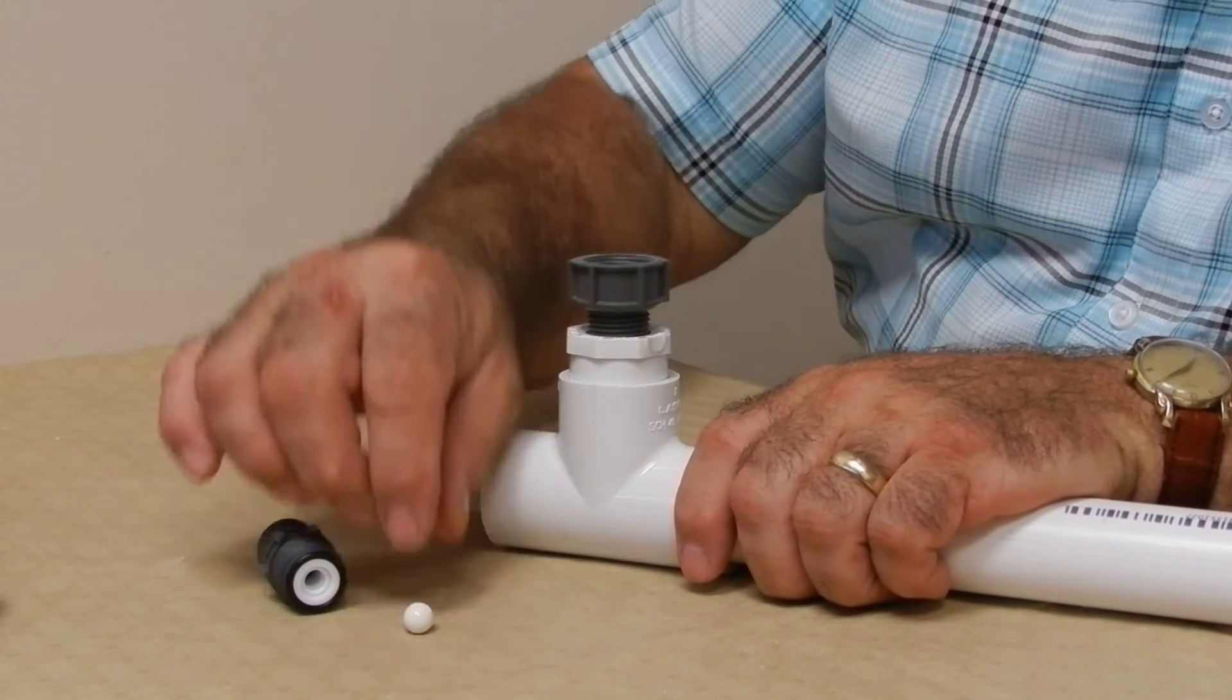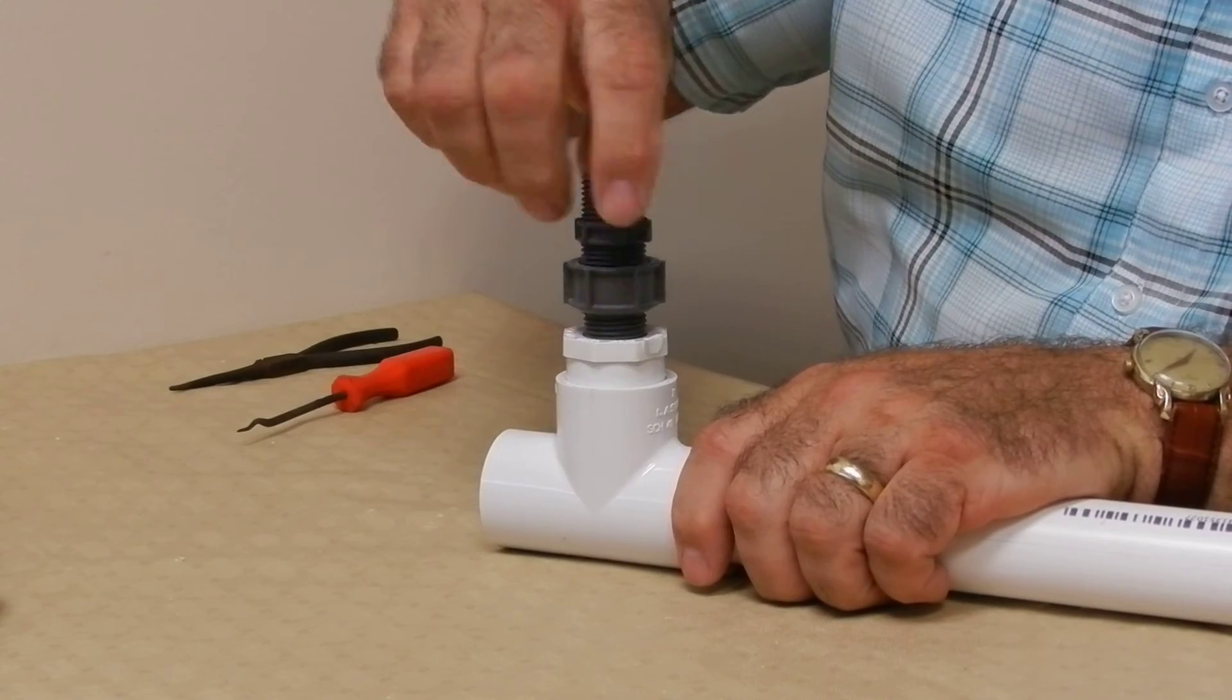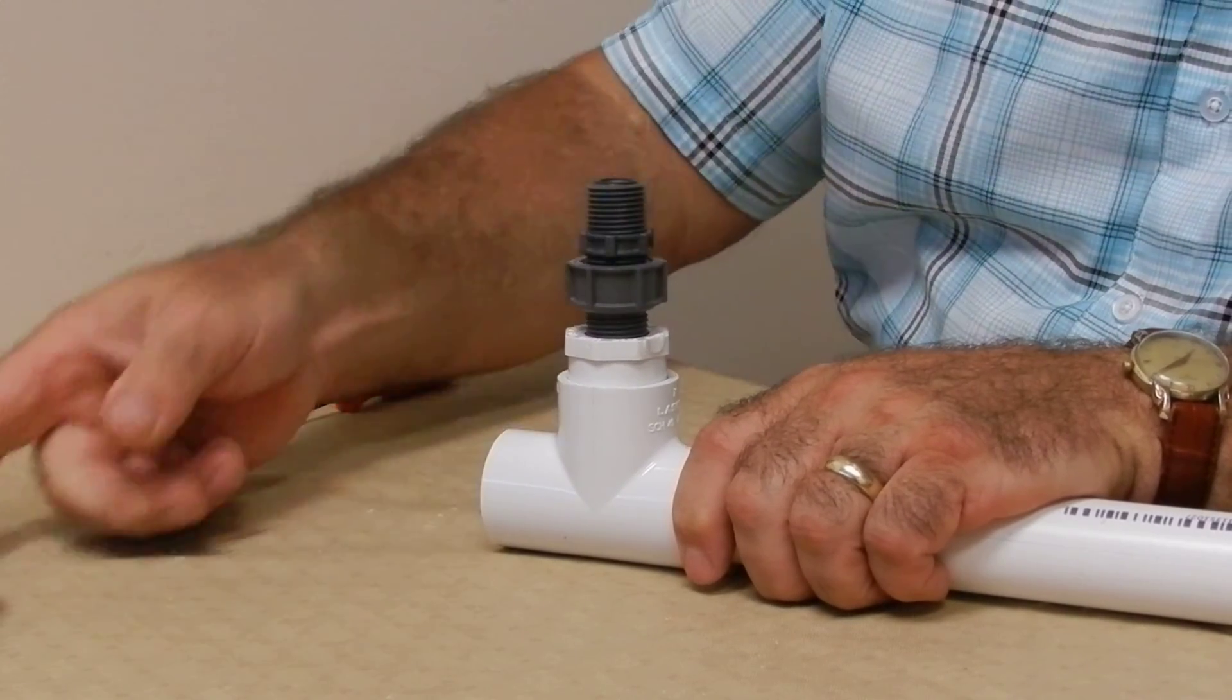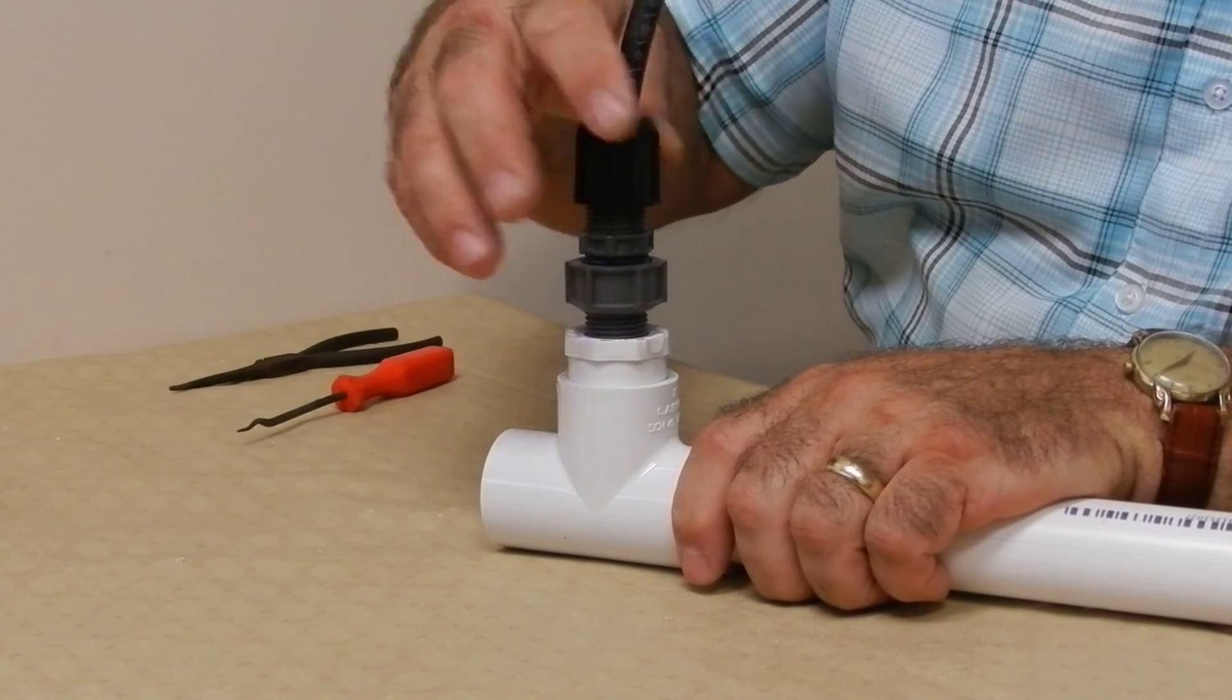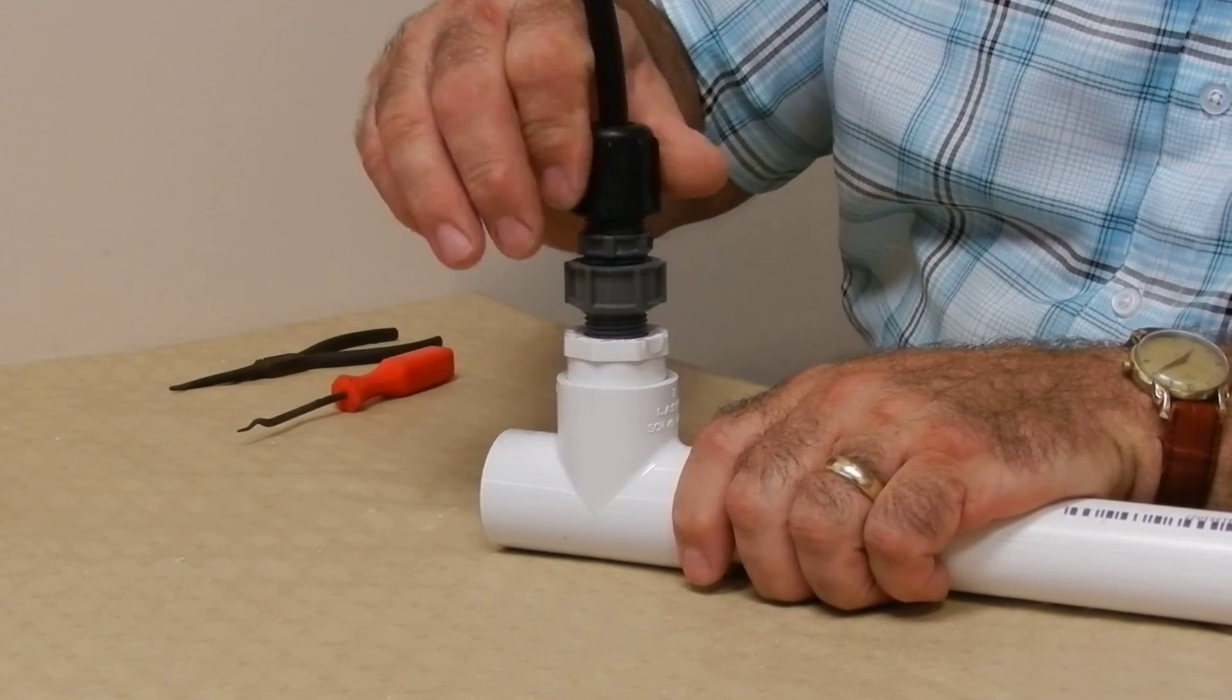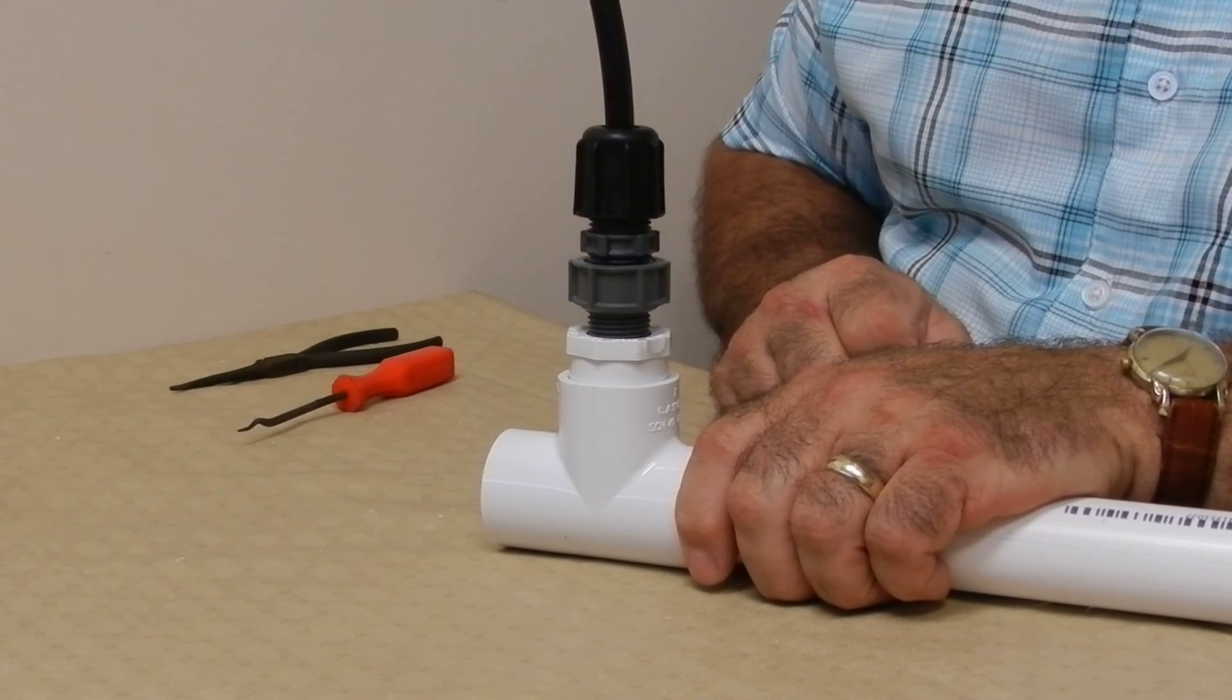Replace the spring, replace the ball, replace the tube adapter. Hand tight. The hose with the connecting nut. Hand tight. Turn on the water and turn on your pump.